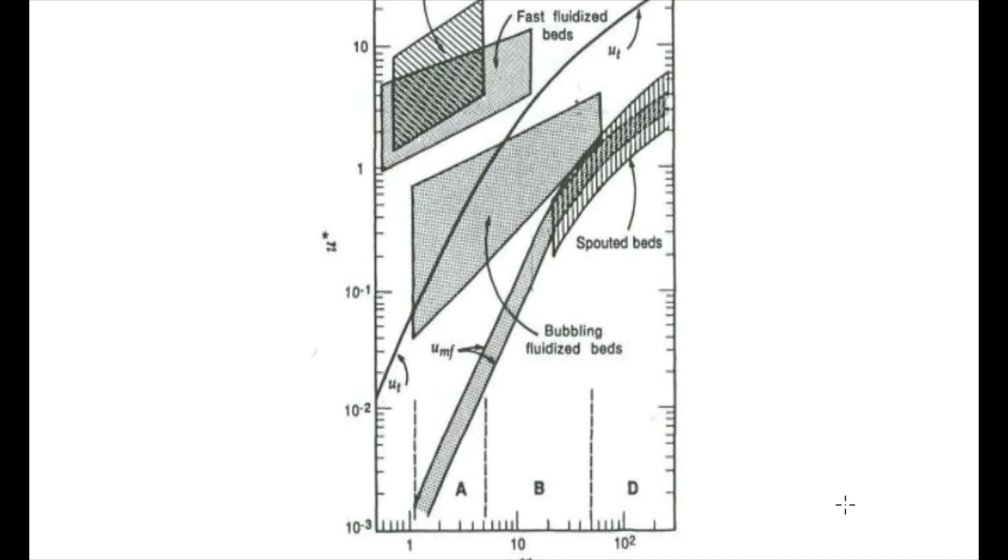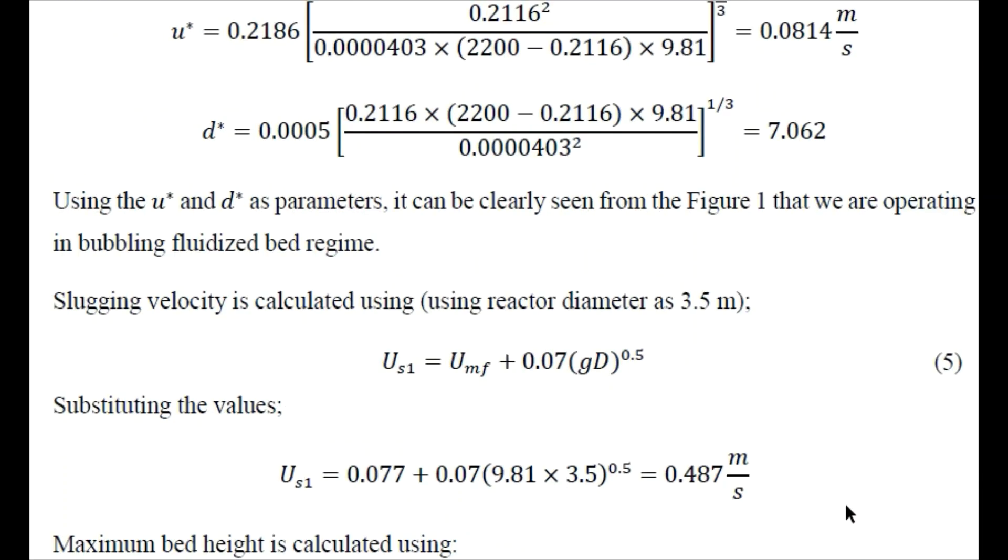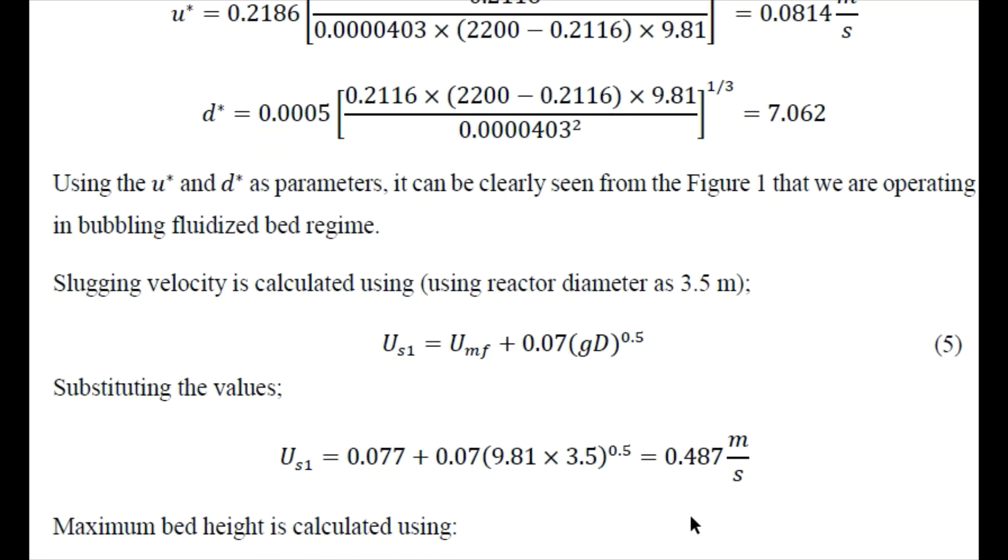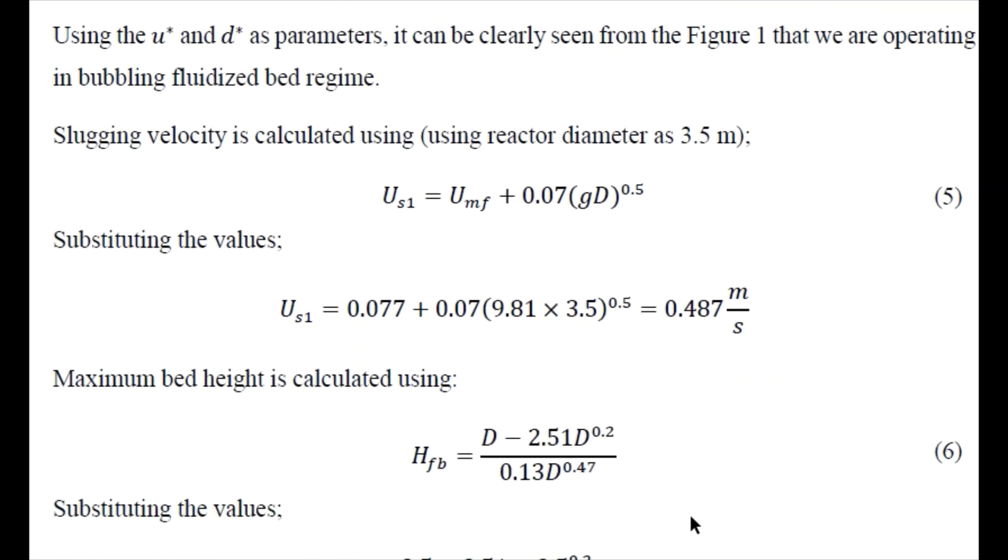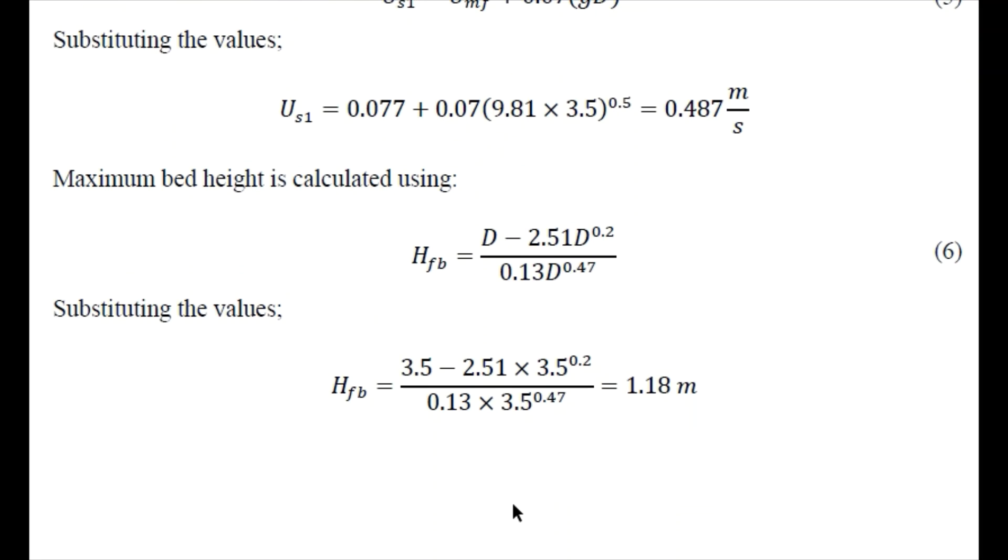Next we need to find the slugging velocity that is calculated based on the minimum fluidization velocity and reactor diameter that is initially taken as 3.5 meter. Just substituting these values we obtain the slugging velocity as 0.487 meter per second. Now maximum bed height can be determined based on the diameter of the reactor using this equation. We just need to substitute these values so we obtain the bed height as 1.18 meter.